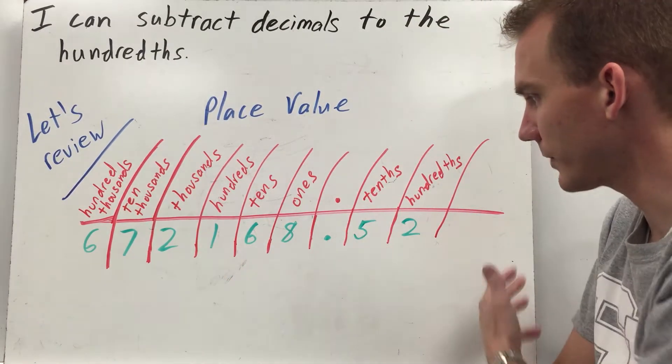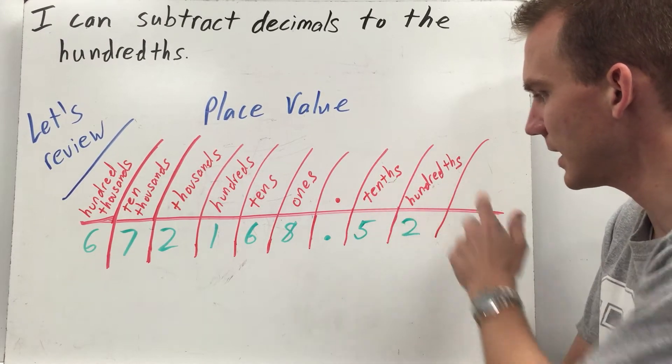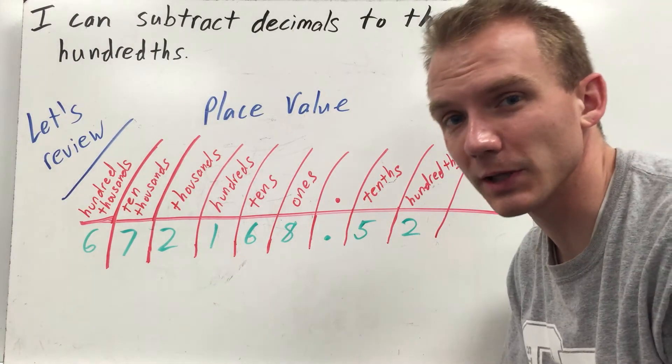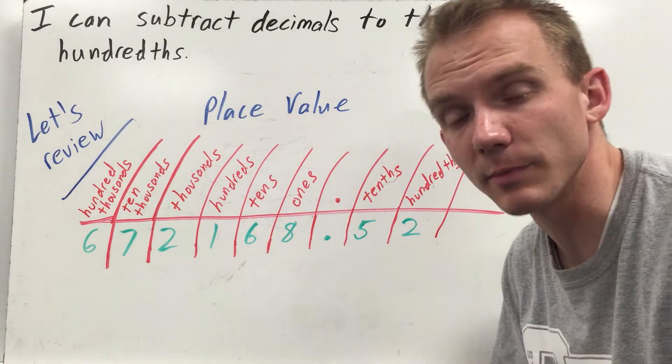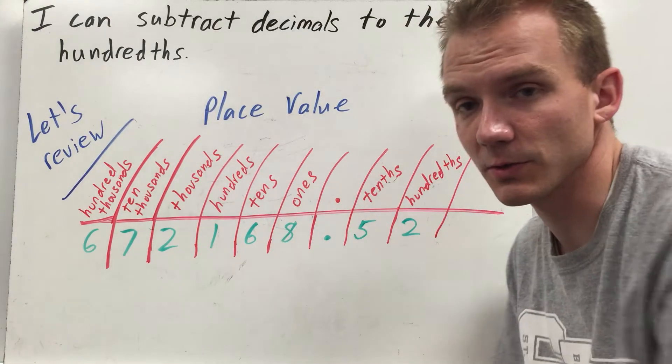You have your decimal point here and then to the right of that you have your tenths and hundredths with the 'th' there at the end to indicate the decimal. Wherever the number falls indicates its place, indicates its value based upon its place value. So like six tens equals 60 but eight ones is only eight.